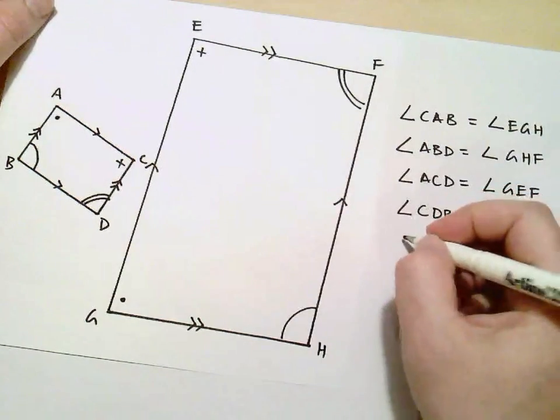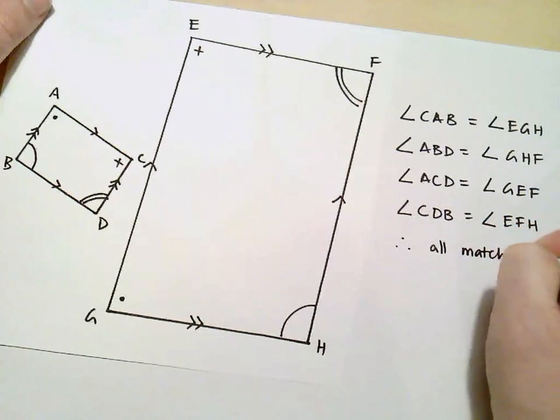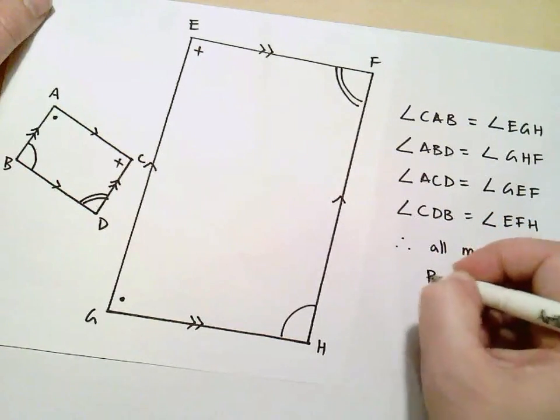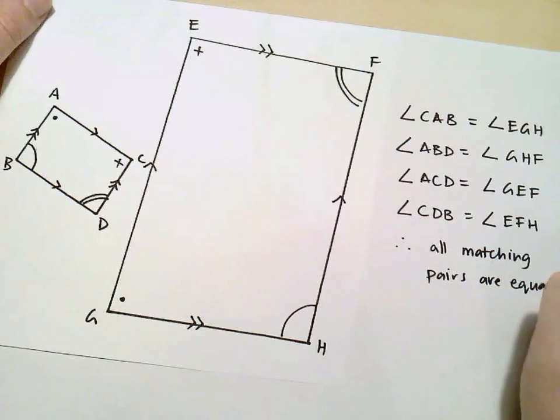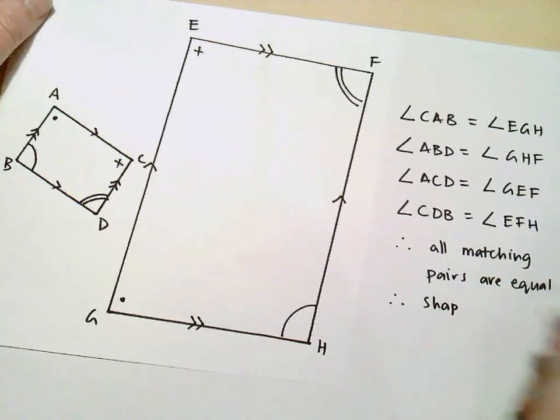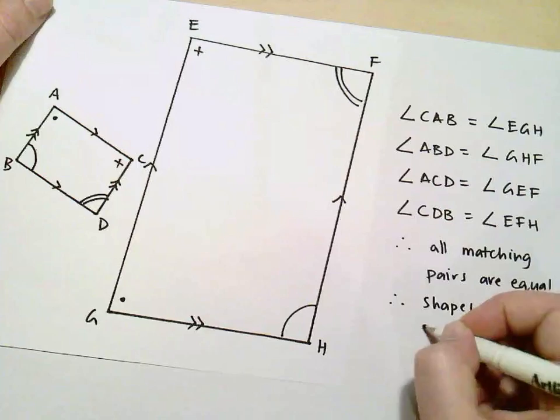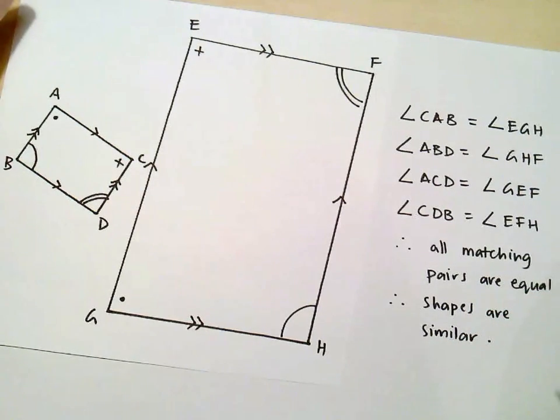So what I've shown here is that these matching pairs of angles, that they are equal. So I can say therefore all matching pairs are equal. And so I can therefore say these shapes or these figures are similar.